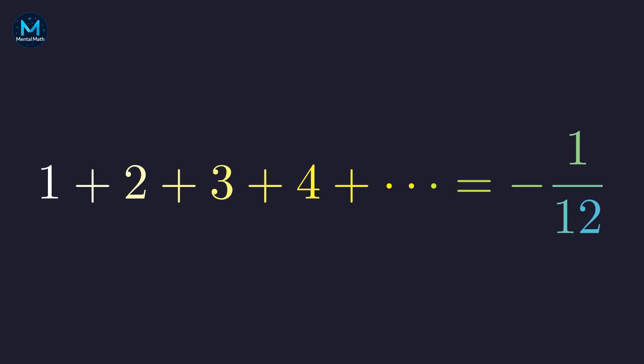Welcome back to Mental Math. This statement is one of the most famous and misunderstood in all of mathematics. The sum of all positive integers appears to obviously diverge to infinity. However, through a set of techniques known as regularization, we can assign a finite and deeply meaningful value to this series, negative 1 twelfth. This seems impossible. How can an infinite sum of positive numbers equal a negative fraction?